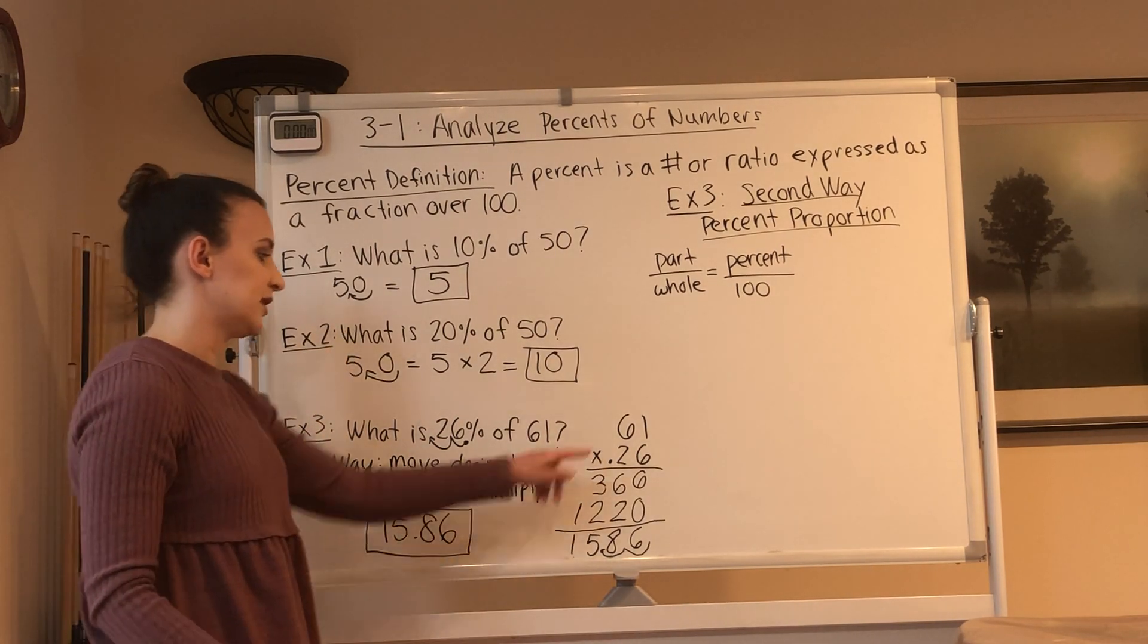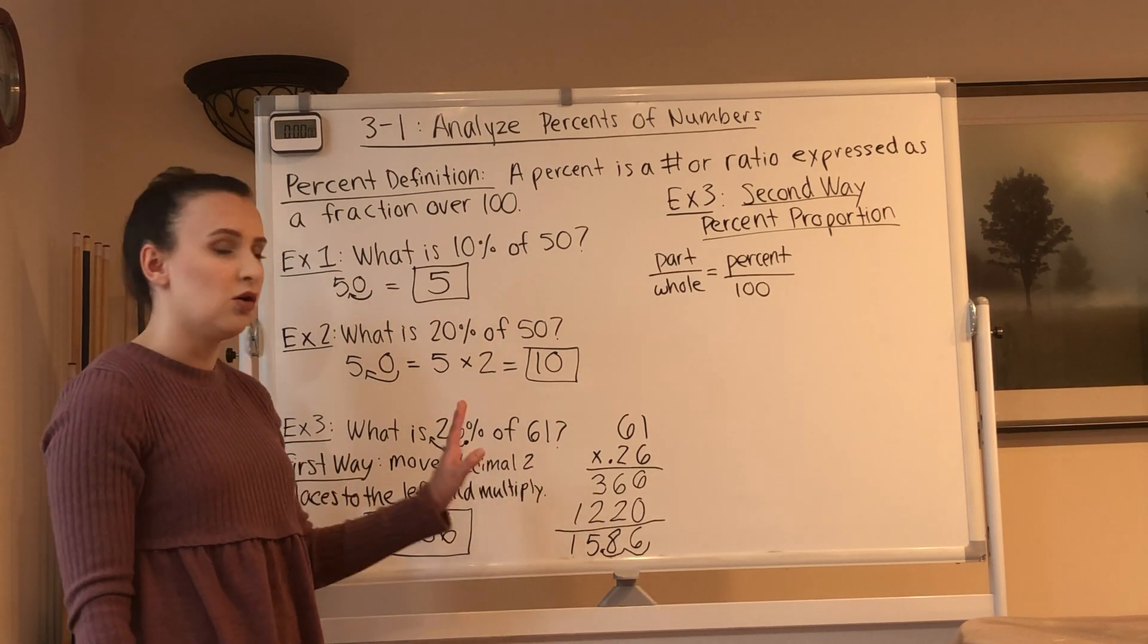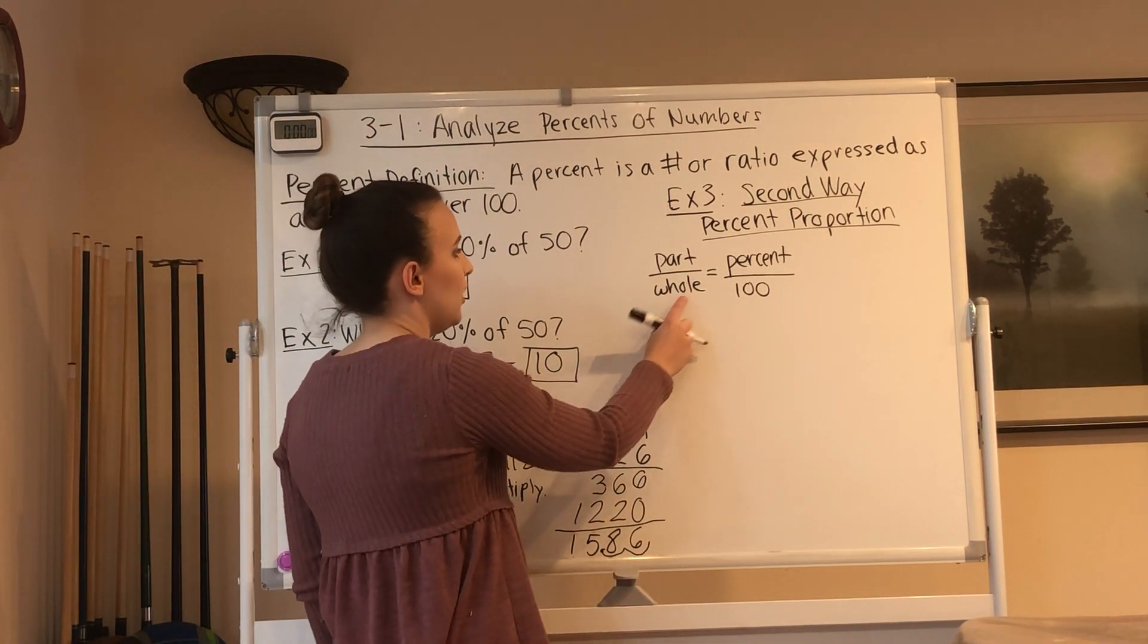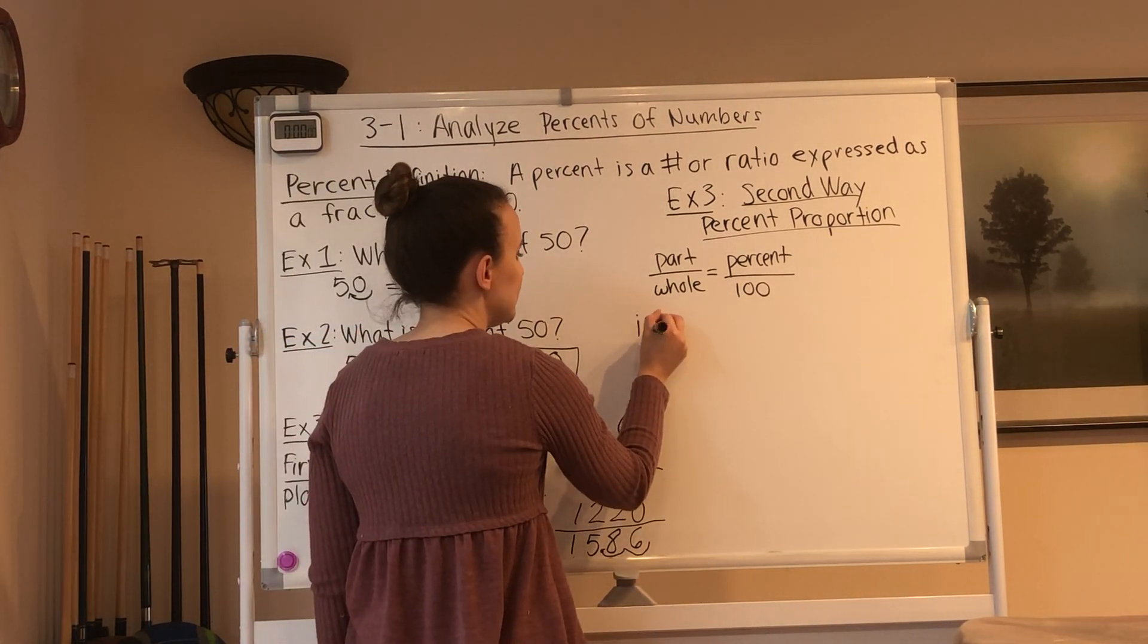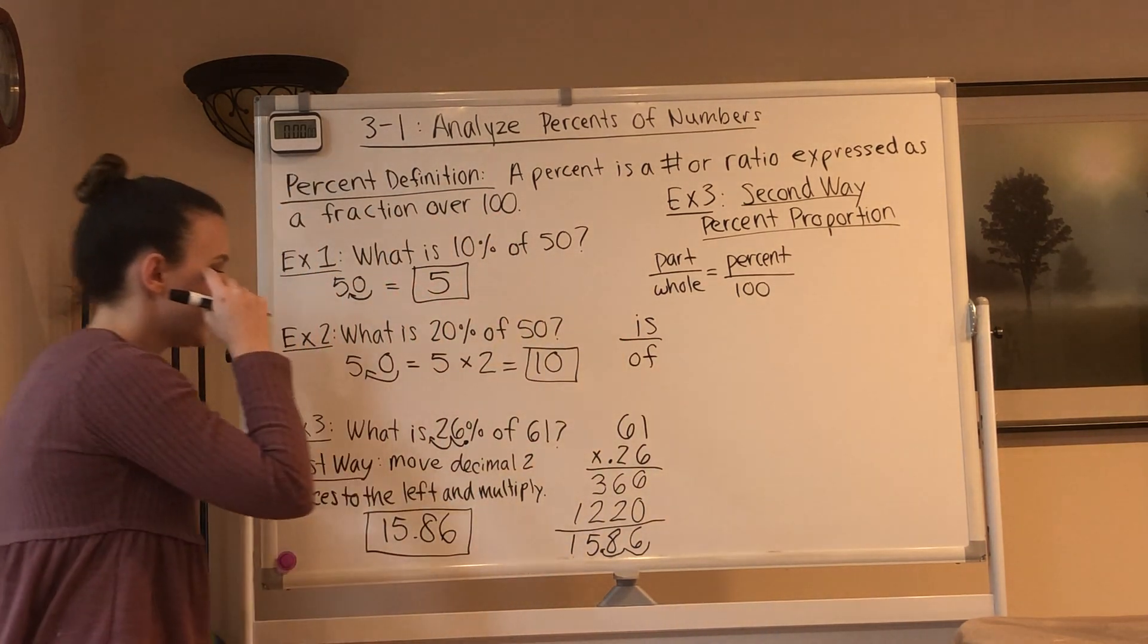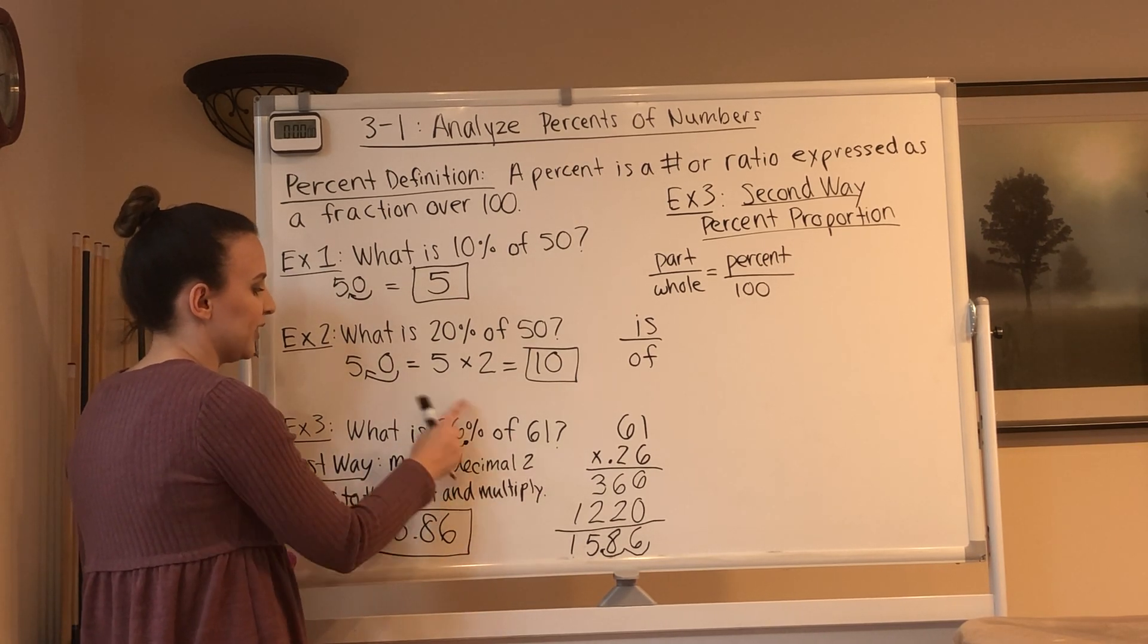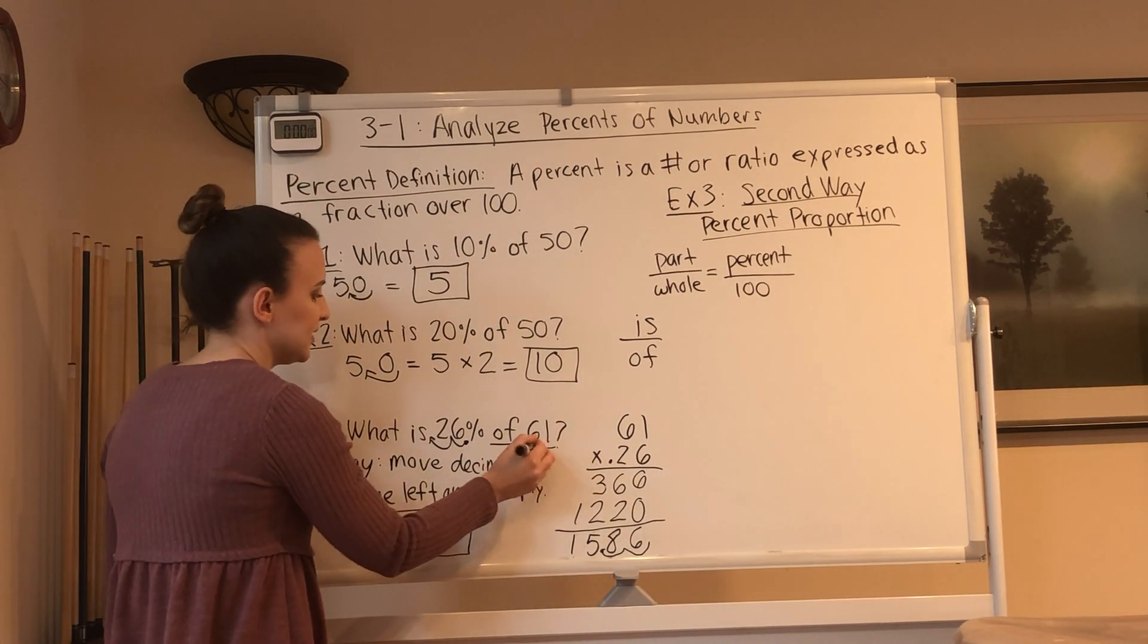You can also do that in a calculator. 61 times 0.26, but I want you writing all the work down for this to see it longhand as well. Percent proportion is the next way. Percent proportion is part over whole equals percent over 100. So now part over whole, the is is your part and the of is your whole. So if we look at this problem, what is 26%? Now this is is not your part because this is the percent, right? It's telling you 26% of 61. That's your whole.